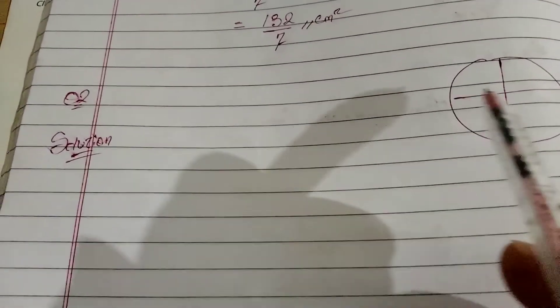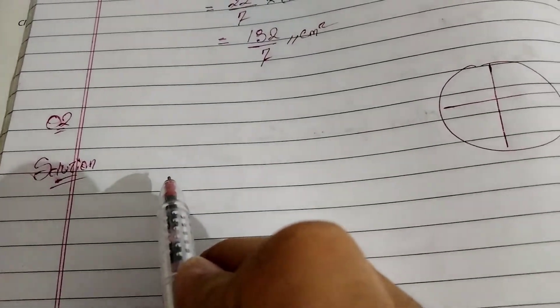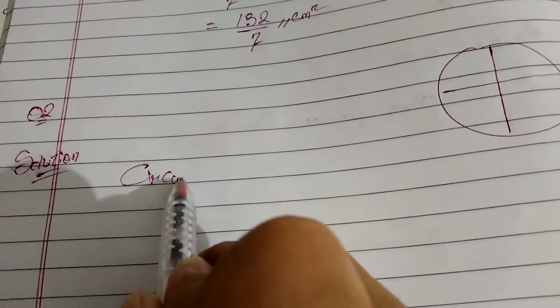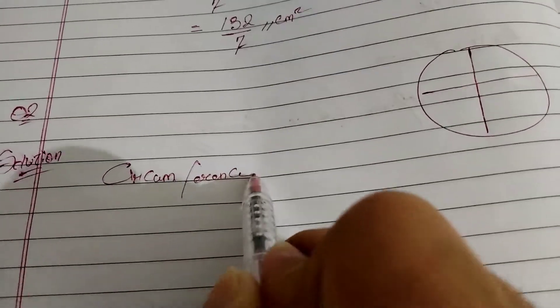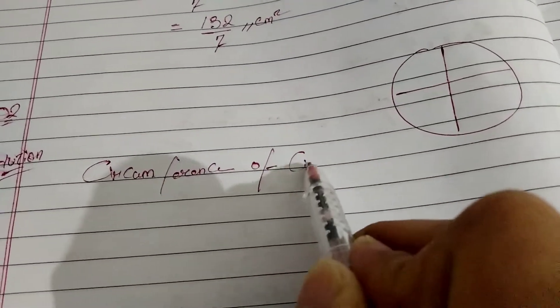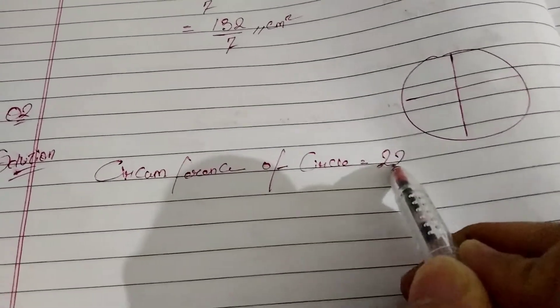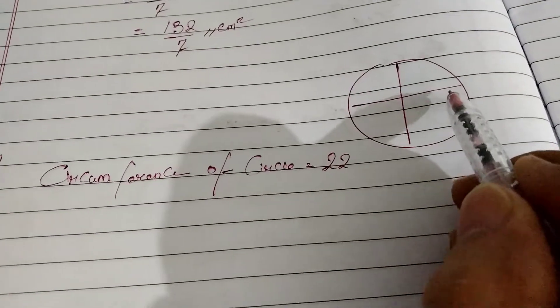I'm ready for question number 2. Let's start from the question. We have found out that we have to do circumference of circle, that is 22. So we have circle divided into four equal parts, so it's 1 by 4.